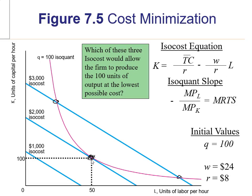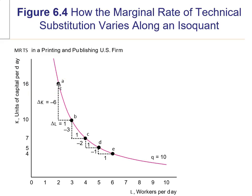Where the two curves are tangent at point X, their slopes are equal. At the $3,000 isocost, the slopes of the blue and pink curves are not the same — the pink is steeper than the blue. You cost minimize where the slope of the isocost curve equals the slope of the isoquant. The slope of the isoquant is also known as the MRTS. As a quick recap, the MRTS at point A means you are willing to swap out six units of capital for one unit of labor.